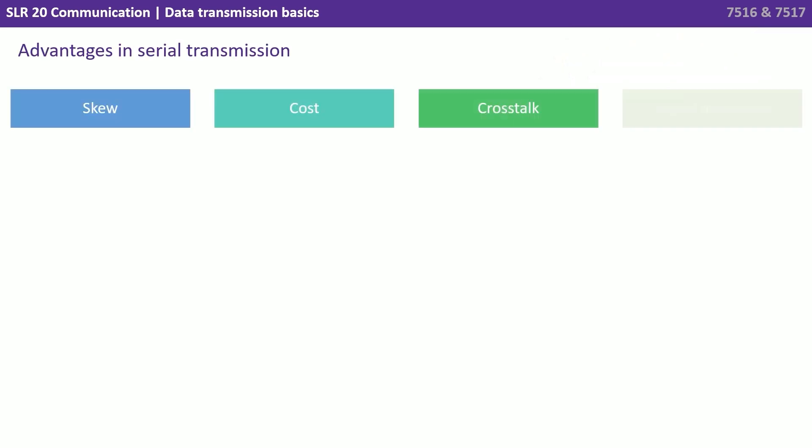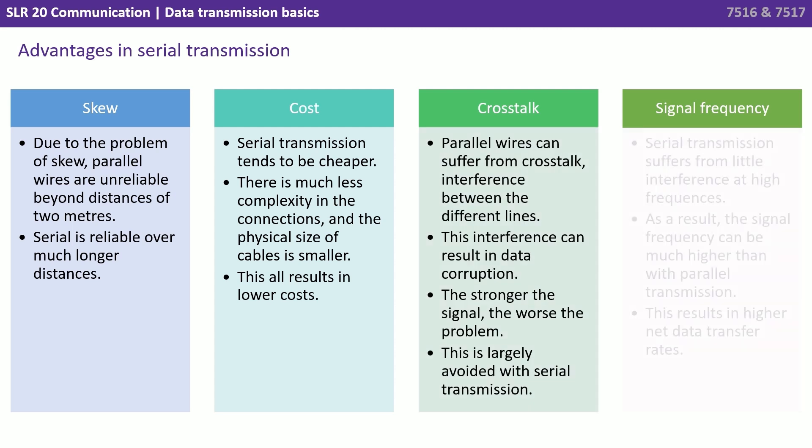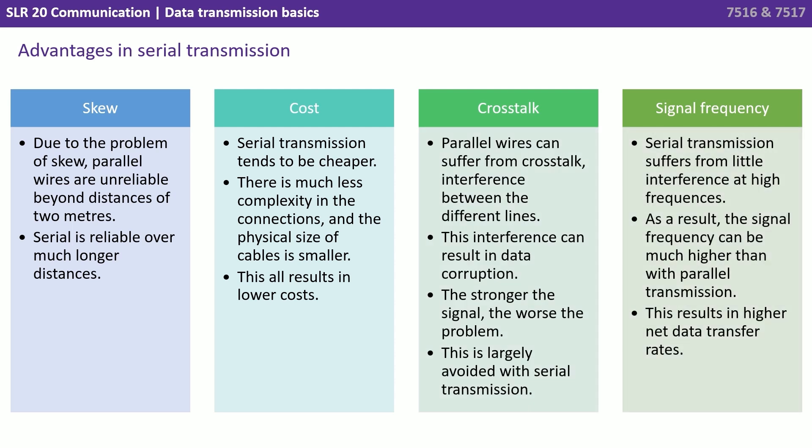Looking at the advantages of serial transmission: due to the problem with skew, parallel wires are unreliable beyond distances of 2 metres, whereas serial is reliable over much longer distances. Serial is also cheaper — there is much less complexity in connections and the physical size of the cable is smaller, resulting in lower costs. Parallel wires can suffer from crosstalk, which is interference between the different lines, and this can result in data corruption. The stronger the signal the worse the problem, and this is largely avoided with serial transmission.